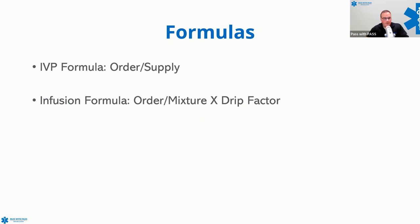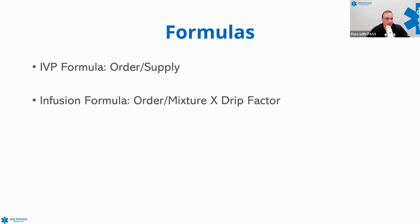There are two formulas I'd recommend you know prior to the registry. If you know these two, you can figure out virtually any medication math problem. For an IV push medication: order over supply. For an IV infusion: order over mixture — or supply — multiplied by your drip factor. Generally we're going to be using a 60-drop set for infusions.